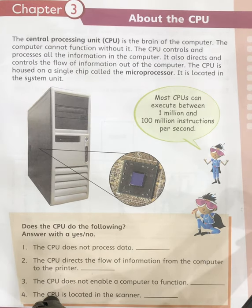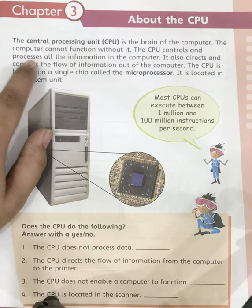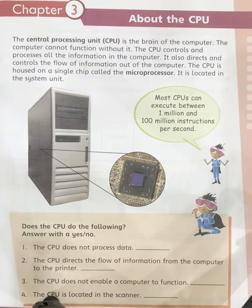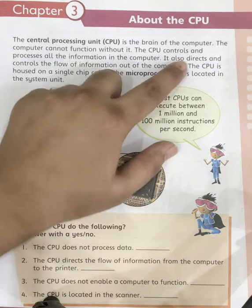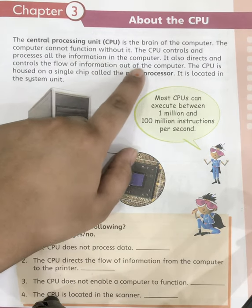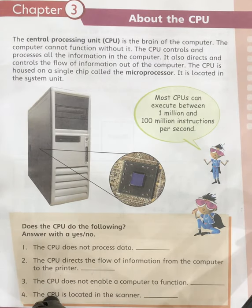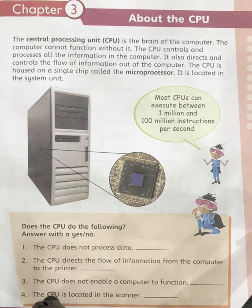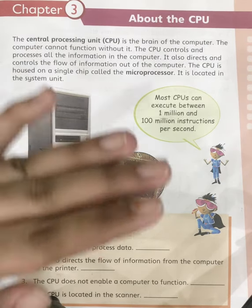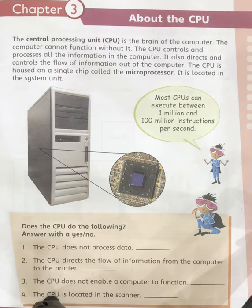The CPU is the most essential part of a computer — the computer cannot function without it. The CPU controls and processes all the information in the computer. It also directs and controls the flow of information out of the computer, and connects the different parts. For example, the wire of the printer is attached to the CPU, as are the wires of the mouse, keyboard, and monitor. If I want to print a document, the CPU controls the flow of that information.